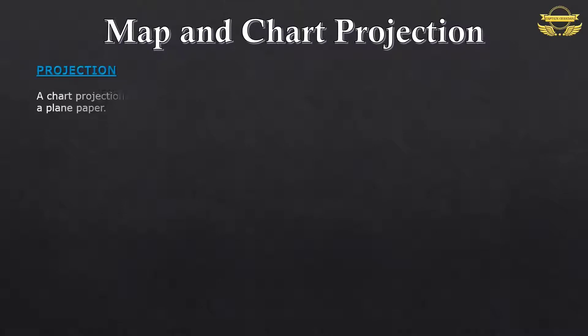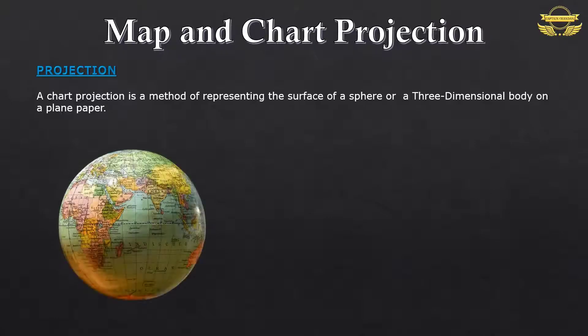A chart projection is a method of representing the surface of a sphere or a three-dimensional body on a plane paper.